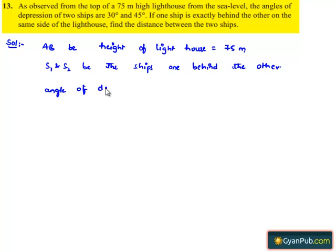Let angle of depression from the top of the lighthouse to S1 be alpha, that is equal to 30 degrees, and angle of depression of ship S2 be beta, which is equal to 45 degrees.